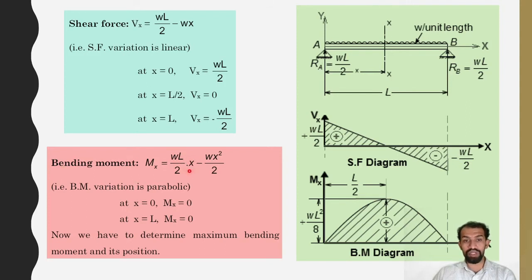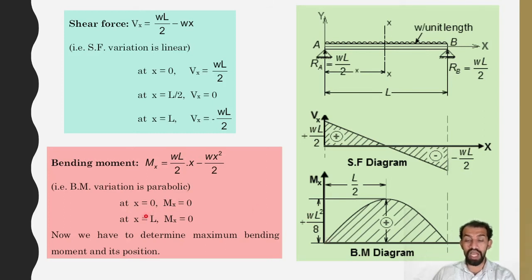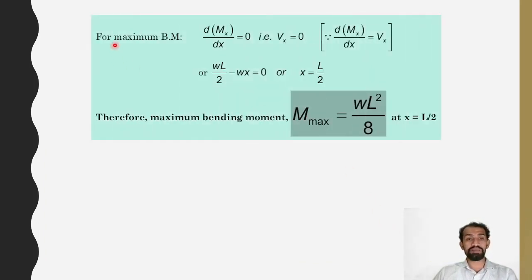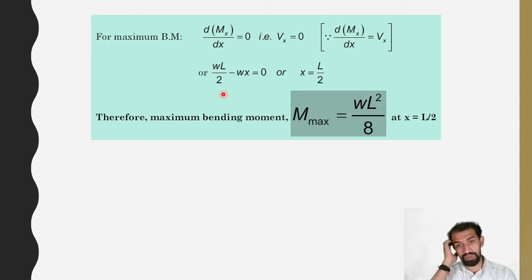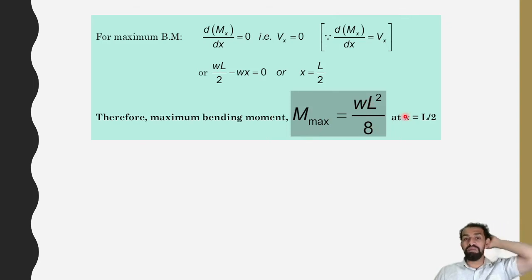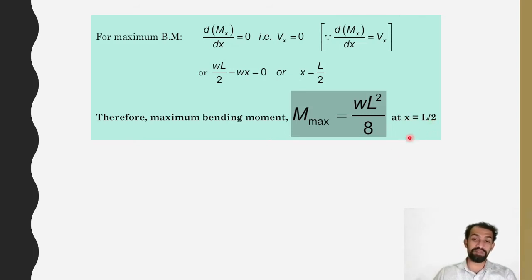Bending moment Mx equals W·L by 2 into x minus w·x² by 2. The variation is parabolic: at x equals 0, Mx equals 0; at x equals L, Mx equals 0. Differentiating Mx with respect to x and setting it to zero gives Vx equals 0, so W·L by 2 minus w·x equals 0, giving x equals L by 2. Therefore the maximum bending moment equals W·L² by 8, occurring at x equals L by 2.